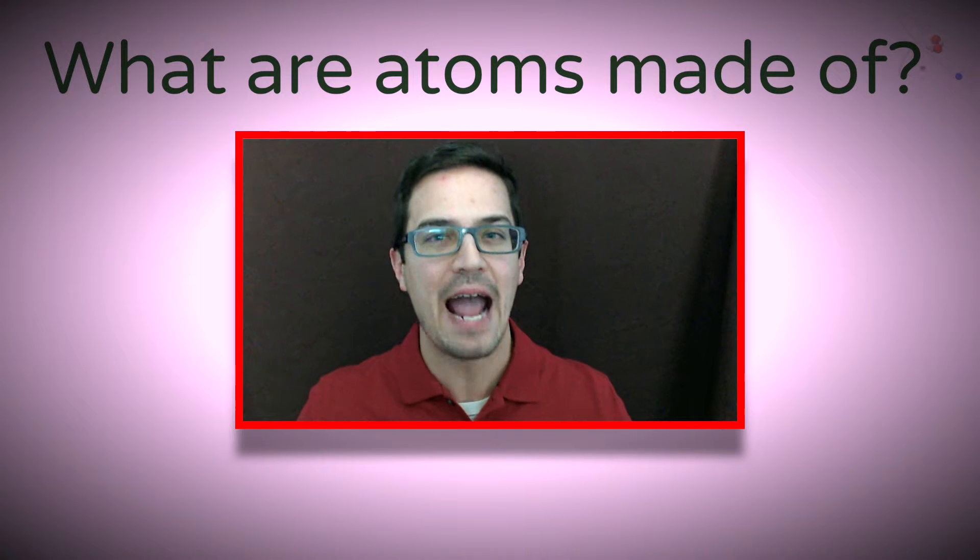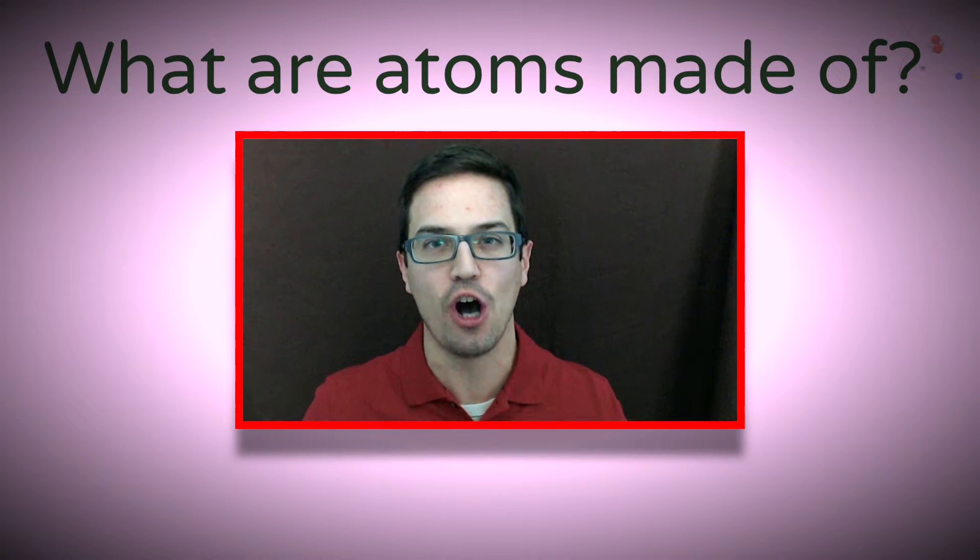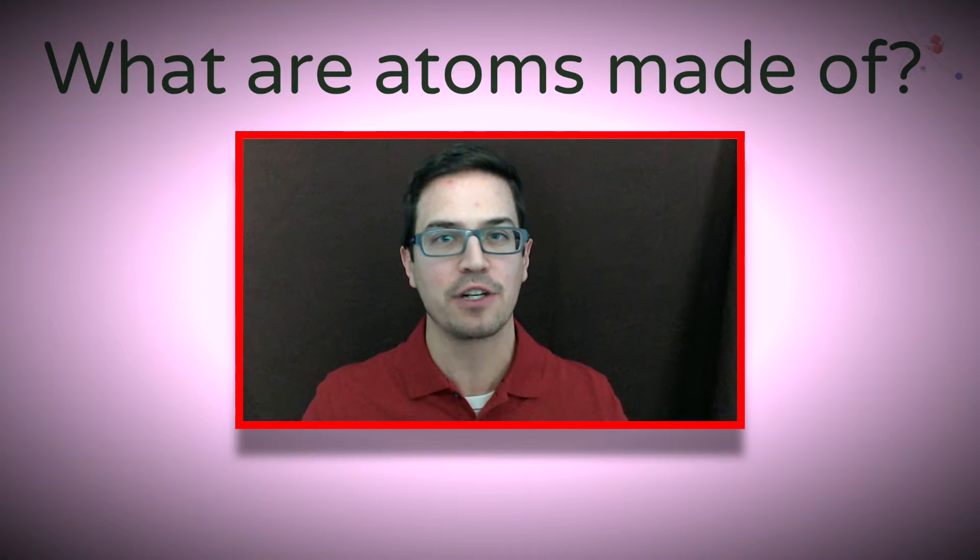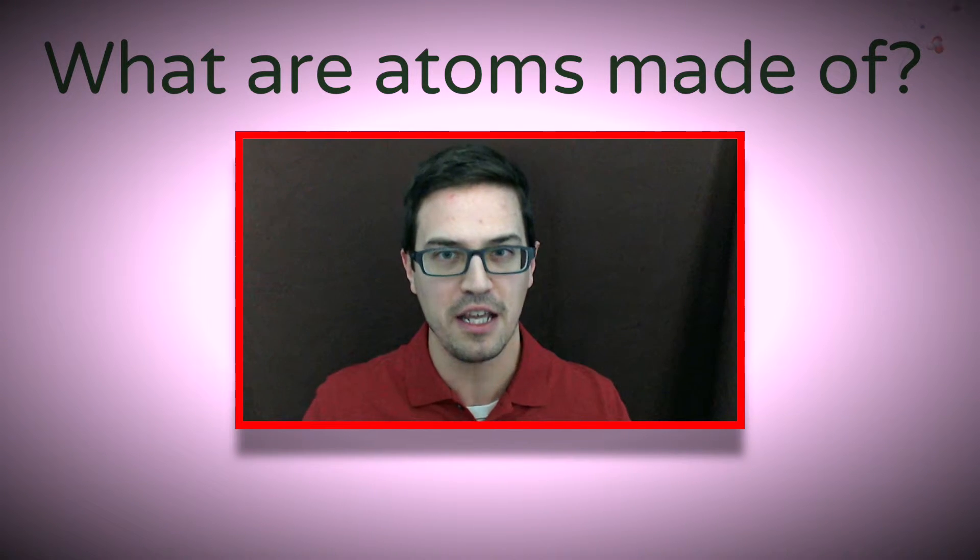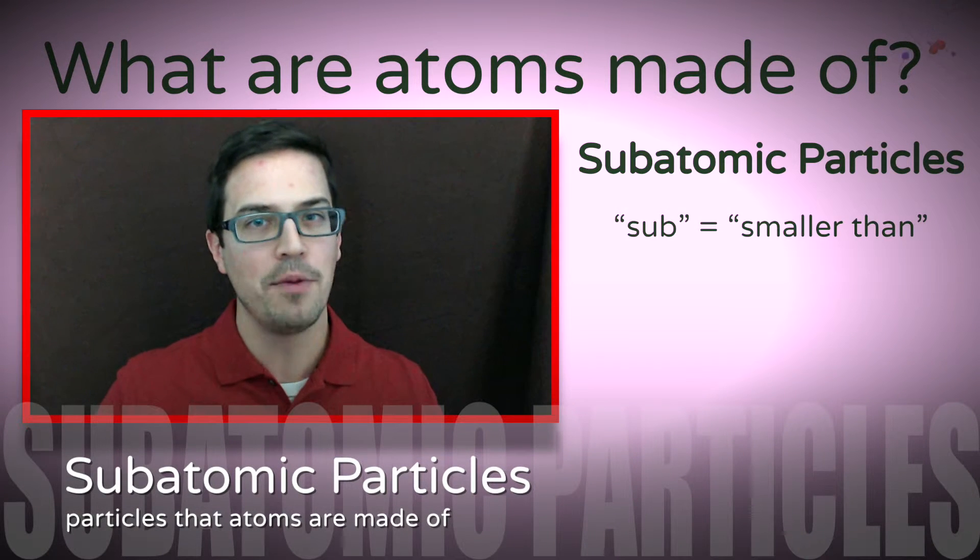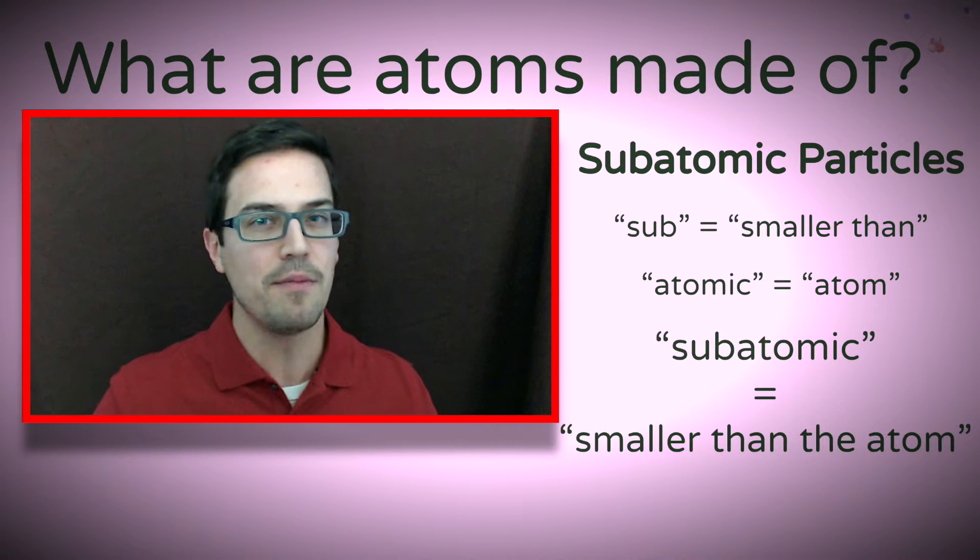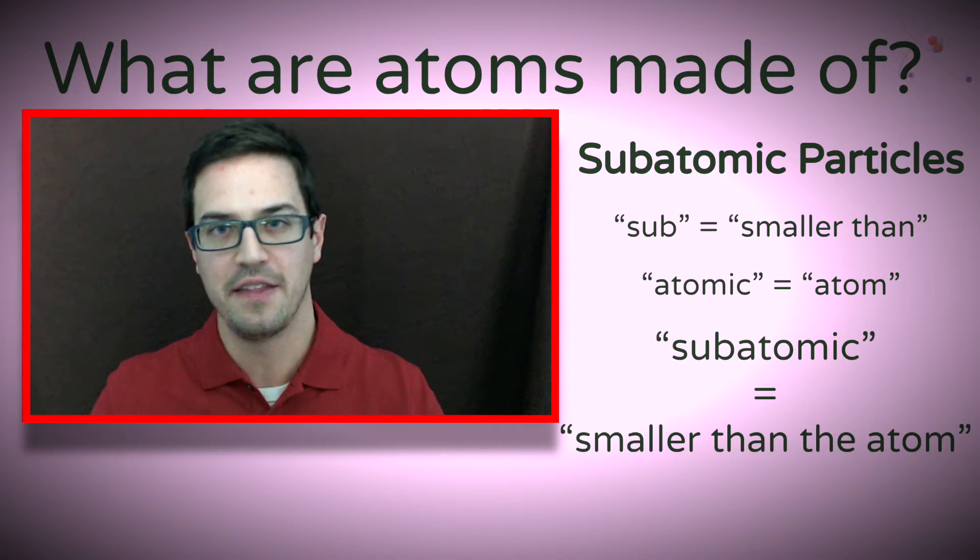So matter is made of atoms, but what are atoms made of? For a long time, scientists thought that atoms are as small as you can go in terms of breaking down matter. However, after some time and some clever experiments by scientists, they figured out that atoms themselves are made up of other smaller things. These things are called subatomic particles. Sub meaning smaller than and atomic meaning related to the atom. So subatomic just means smaller than the atom.